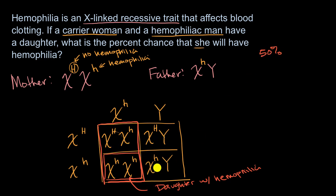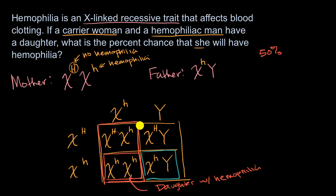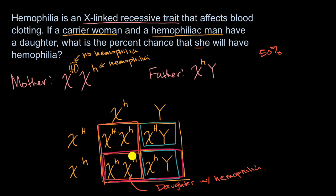What's useful about this Punnett square is you could answer all sorts of questions. What is the percent chance that they have a hemophiliac son? Well, one out of these four scenarios is a hemophiliac son, so there's a 25% chance. Similarly, there is a 25% chance that they have a non-hemophiliac son. If someone asked what is the percent chance that they have a hemophiliac offspring, that would be two out of the four scenarios — so that would be 50%.